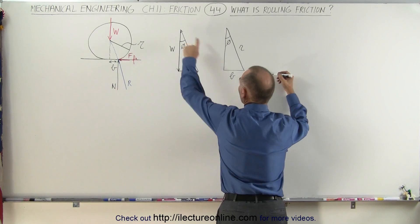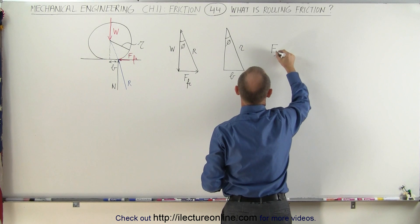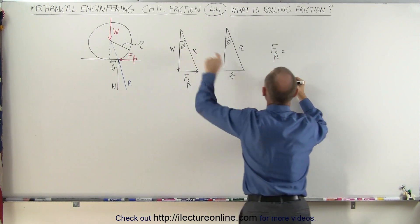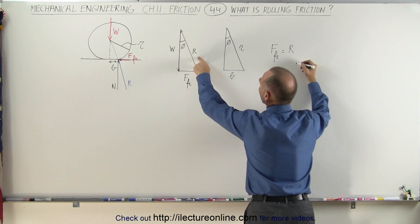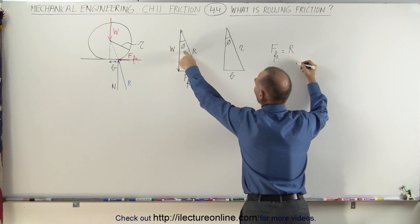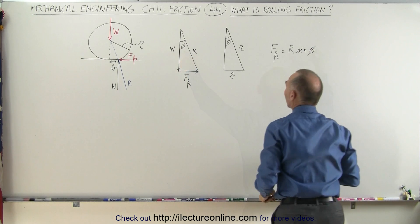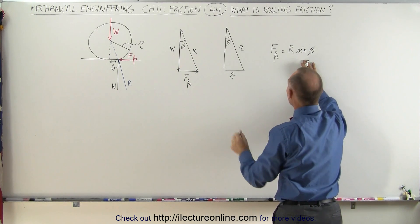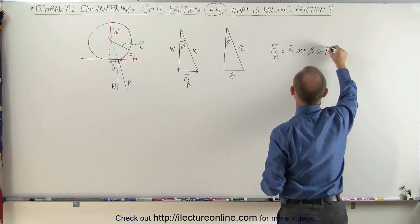Based upon this, the friction force can be found by taking the reaction force R and multiplying that times the sine of phi. The sine of phi, since we're always dealing with very small angles, is approximately equal to the tangent of phi. So R sine phi is approximately equal to R tangent phi.